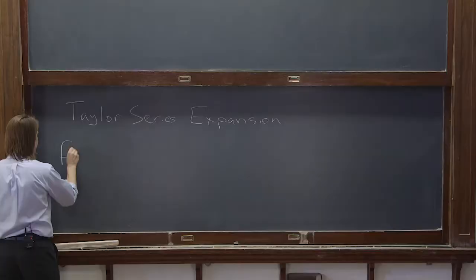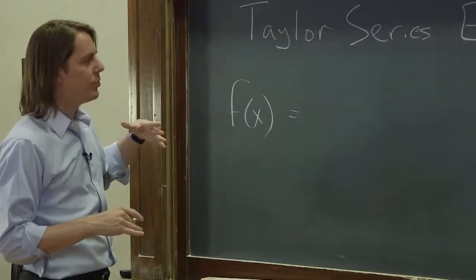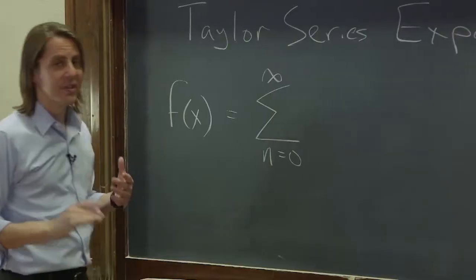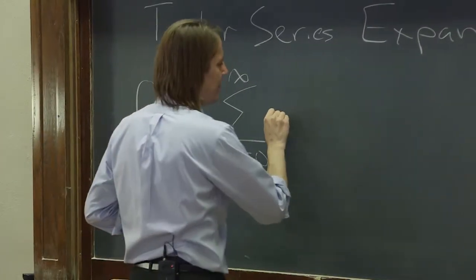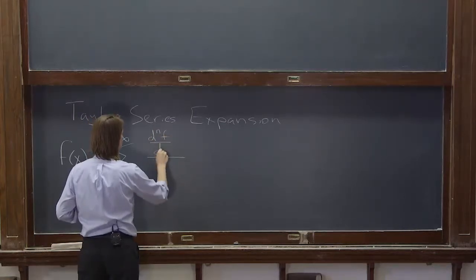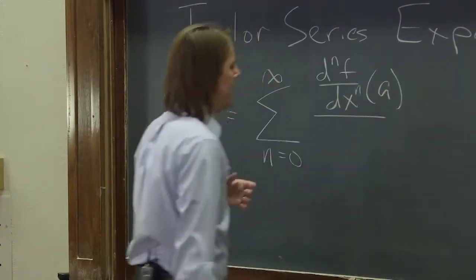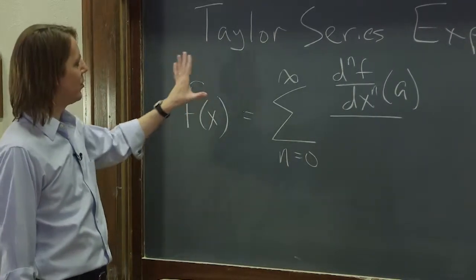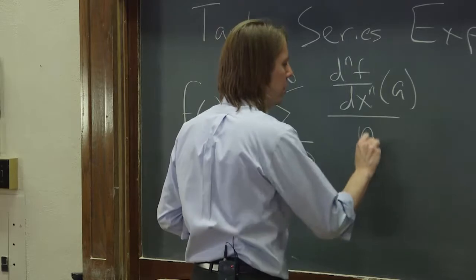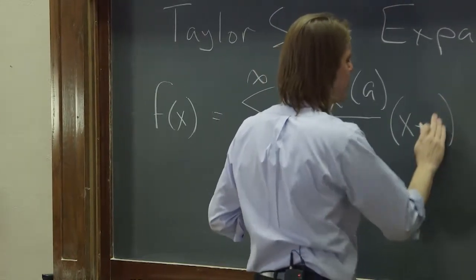What it does is you can take any function f of x and describe it with an infinite series from n equals 0 to infinity. It takes an infinite number of terms, but don't worry. You take the function and its n-th derivative, d^n f / dx^n, and evaluate that at some point x equals a. We pick a point and call it a — it could be the origin. Then that is over n factorial, and that whole thing is times x minus a to the n.